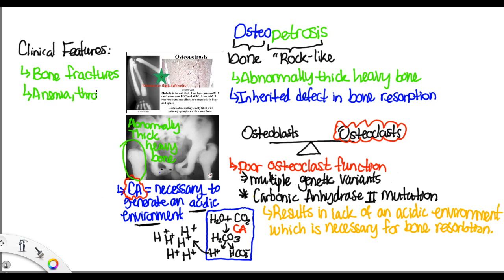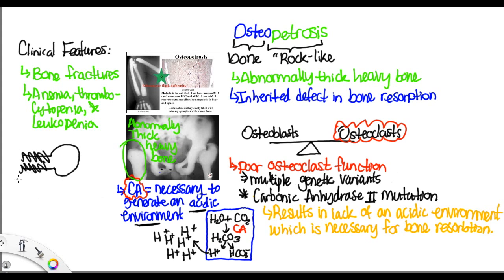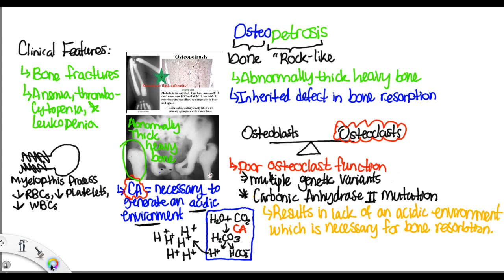Patients can also have anemia, thrombocytopenia, and leukopenia. This occurs because the thickening of the bone replaces the medullary space — a process called myelophthisic process — which knocks out the ability for hematopoiesis, meaning generating blood cells. So individuals end up with anemia (low red blood cells), thrombocytopenia (low platelets), and leukopenia (low white blood cells). These individuals develop extramedullary hematopoiesis, meaning blood cells are made outside of the bone marrow, either in the spleen or the liver.